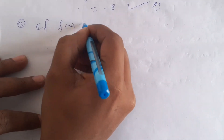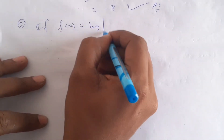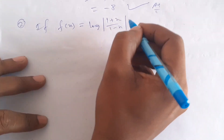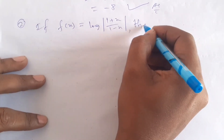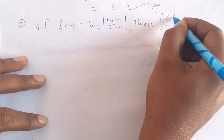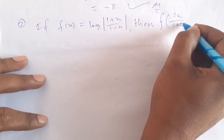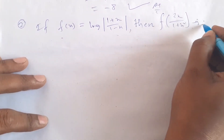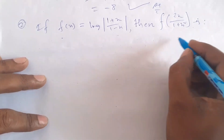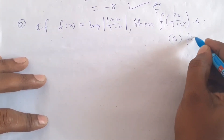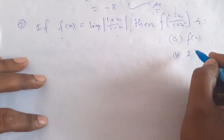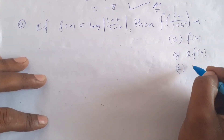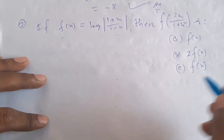If f is equal to log of (1 plus x) by (1 minus x), then find the function of f of 2x by (1 plus x squared).